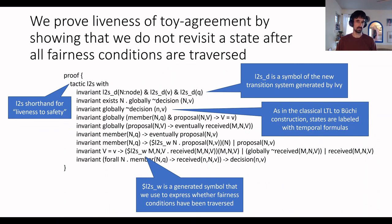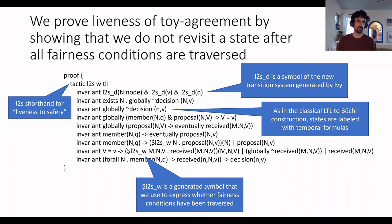In the case of the toy agreement protocol, we provide the invariant shown on screen. Notably, this invariant also talks about the state of the Büchi automaton automatically generated by IVY — you can see this from symbols like L2SD and L2SW, which are part of the transition system generated by IVY. Checking that this is an inductive invariant produces only verification conditions that are decidable in EPR, so IVY can automatically verify it and we have our proof.